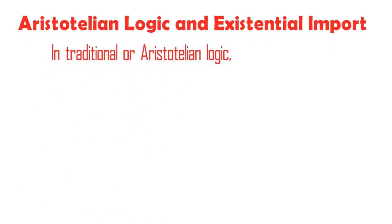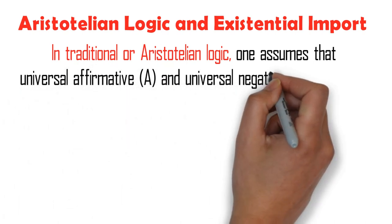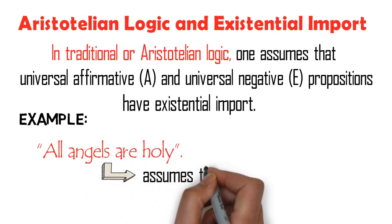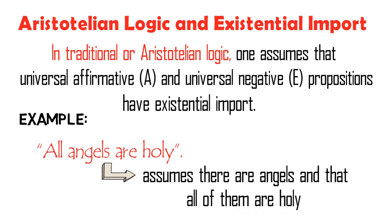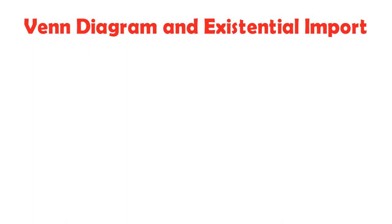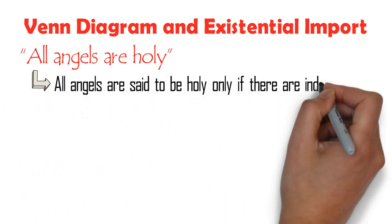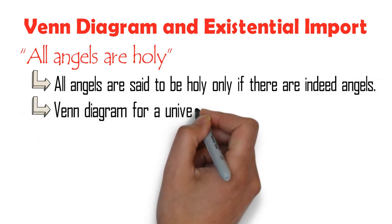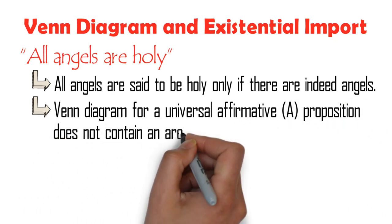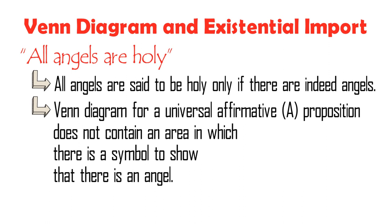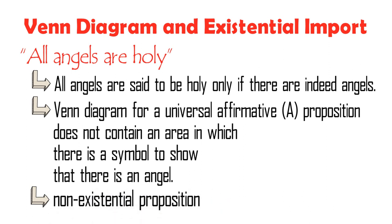Now, in traditional or Aristotelian logic, one assumes that Universal Affirmative A and Universal Negative E propositions have existential import. Thus, in the example 'all angels are holy,' one assumes that there are angels and that all of them are holy. However, in applying the Venn Diagram, one does not make this assumption. In the Venn Diagram, all angels are said to be holy only if there are indeed angels. But the Venn Diagram for a Universal Affirmative A Proposition does not contain an area with a symbol to show that there is an angel. Hence, the propositions 'all angels are holy' or 'no angels are holy' are non-existential propositions. In the first place, there are no angels in reality. This Venn Diagram demonstrates this point.